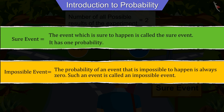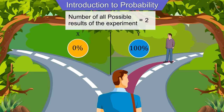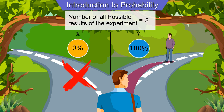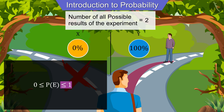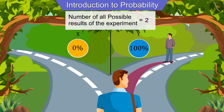Conversely, the probability of an event that is impossible to happen is always zero — such an event is called an impossible event. For example, after finding the right path, Joseph will not go on road X, so going on road X is an impossible event. Based on this, the maximum limit of probability of an event is one and the minimum limit is zero.